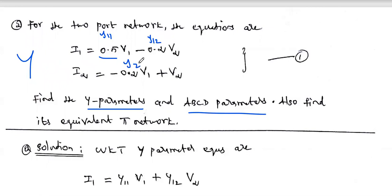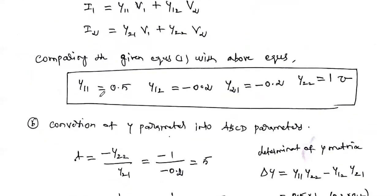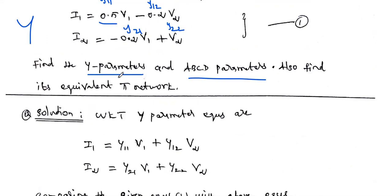In the second equation, the coefficient of V1 is Y21 and the coefficient of V2 is Y22. From the given equations: Y11 = 0.5, Y12 = −0.2, Y22 = 1. The Y-parameters are directly identified from the equations. Next, we need to find the ABCD parameters, which requires converting from Y-parameters to ABCD parameters.